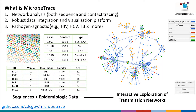MicrobeTrace is a tool designed to enable robust network analysis that includes both sequence and contact tracing data that arise from outbreak investigations and surveillance. It's a very robust data integration platform that allows visualization of very complex data elements that you typically can't visualize in an environment like Excel. It's very pathogen agnostic — we're not tied to HIV, although that's where we've started. We work with hepatitis C, tuberculosis, and a lot of other pathogens where contact tracing networks are typically collected.